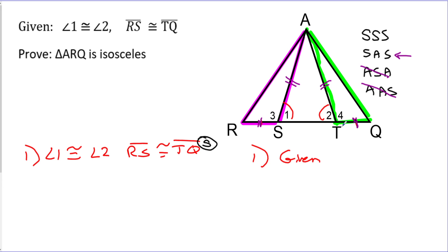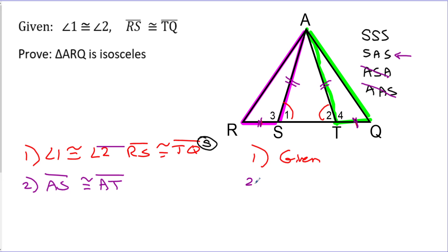Now that we've come up with a plan, let's start writing. Step 2: we're going to say directly that side AS is congruent to side AT. The reason for this is the converse of the isosceles triangle theorem - the isosceles triangle theorem says if the sides are equal then the angles across from them are equal, and the converse is that if the angles are equal, the sides across from them are equal. So I'm going to use the converse of the isosceles triangle theorem. That's another key pair of sides.